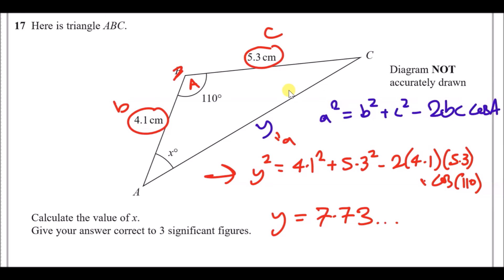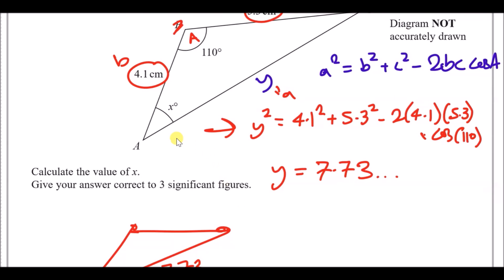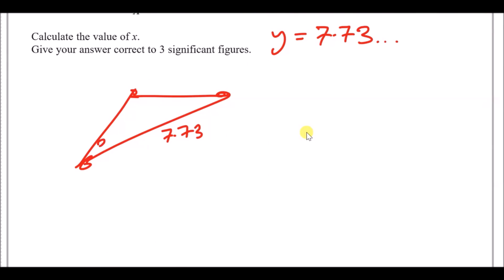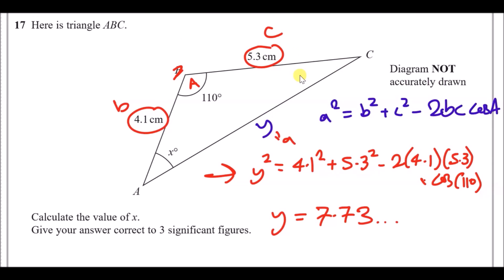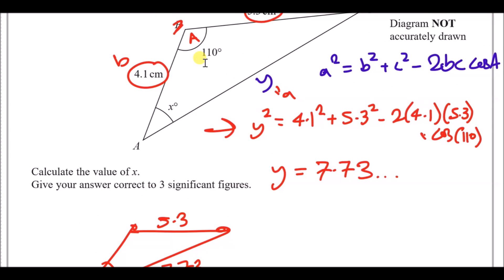Now we've got the length of y, let's go ahead and re-sketch this with an updated diagram. So we're going to have a triangle here. Length is 7.73. We're trying to find angle x. So we need a matching length to angle x, which is 5.3. And opposite 7.73, we need a matching angle, which is 110.